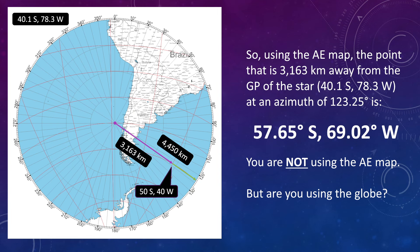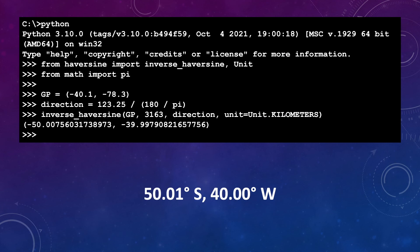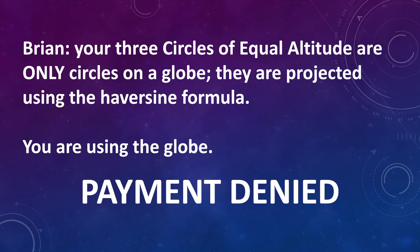So again, let's plug in the coordinates for the GP of the star. So minus 40.1, minus 78.3. And we want to ask the coordinates of the point that is 3,163 kilometers away, at an azimuth of 123.25. And surprise, surprise, we get 50 degrees south and 40 degrees west. So Brian, this is pretty clear that your three circles of equal altitude are only circles on a globe. They are simply projected using the Haversine formula. You are using the globe.